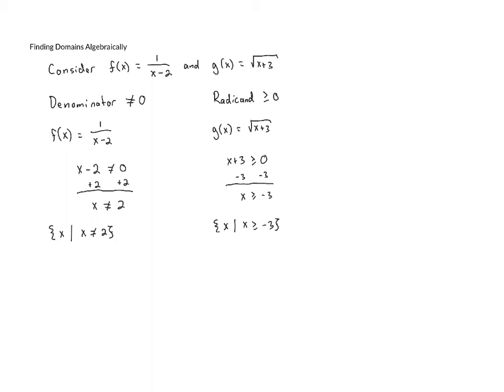These are the two things to look for: a variable in the denominator — in which case we make sure the denominator is not equal to 0 — or a variable inside a radical, in which case we make sure the radicand is greater than or equal to 0. If we have a function that has neither, such as h of x equals 3x squared minus 5x plus one half, then we're not in danger of a 0 in a denominator or taking the square root of a negative number. In that case the domain is all real numbers, written as the set of x such that x is a real number.